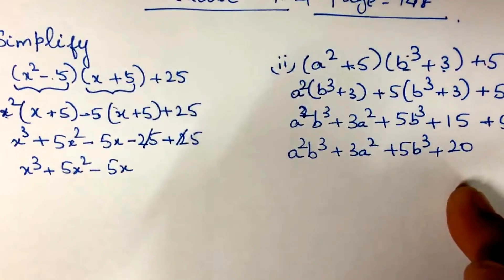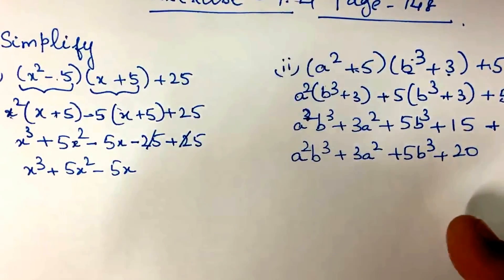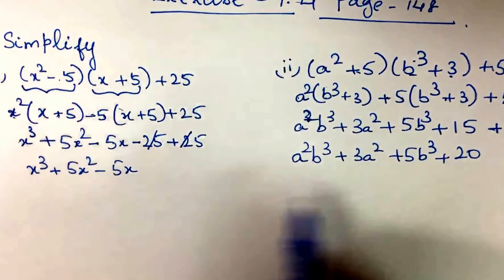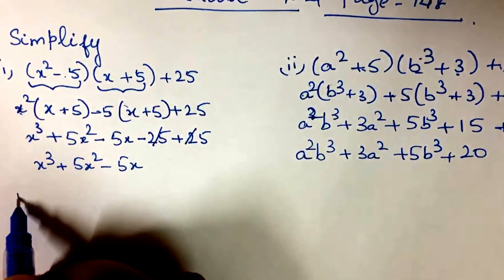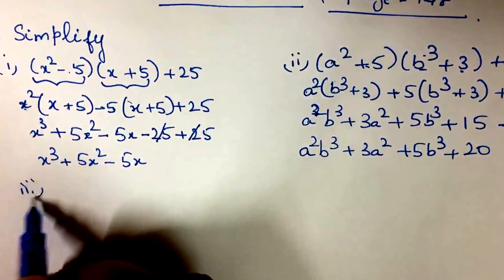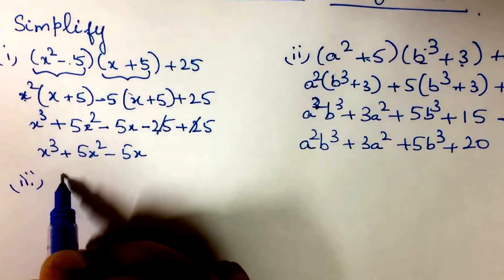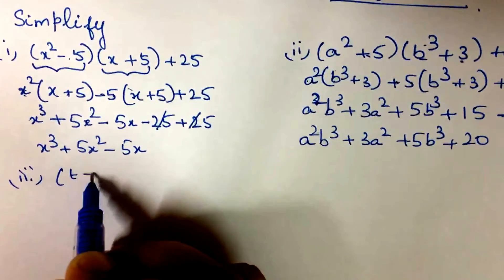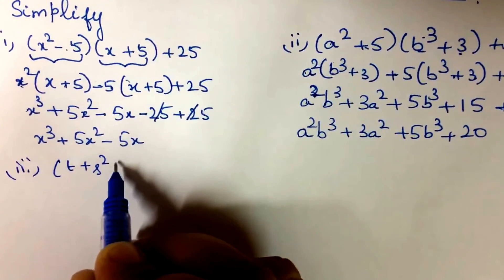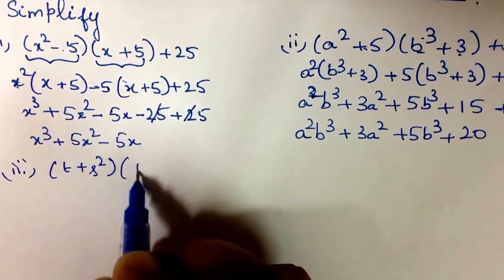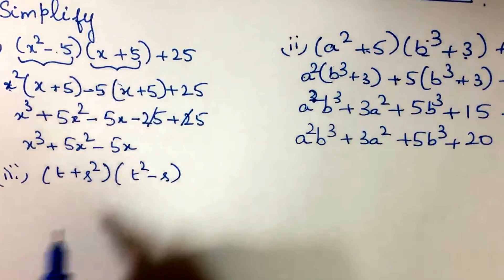These are all unlike terms, so this is the final expression. Equation number 3: (t + s²) into (t² - s).